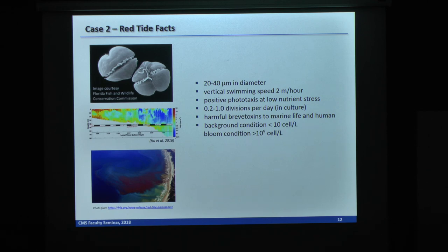The case two is about the red tide on the Florida shelf. For those of you who are not familiar with red tide, I recently learned this myself too. These are dinoflagellates that are 20 to 40 micrometers in diameter. Observation has shown, and also lab experiments show us, they have this vertical swimming speed, like two meters per hour in the field, which means they migrate vertically and against the vertical motion of the water. And also they have positive photo-taxis at low nutrient stress. Which means that when nutrient is rich, they swim upward to take advantage of light. But when nutrient is poor, they dive into the bottom to stay away from light. So there's a 0.2 to 1 division speed per day. And this number is meaningful later on. And also they produce harmful algal toxins that are harmful to marine life and humans.